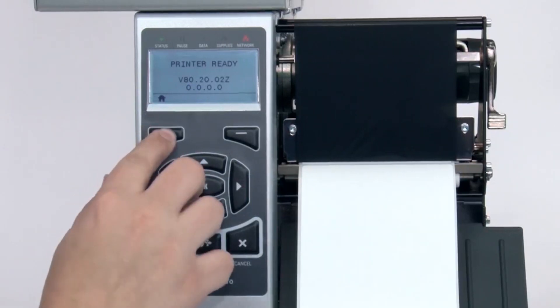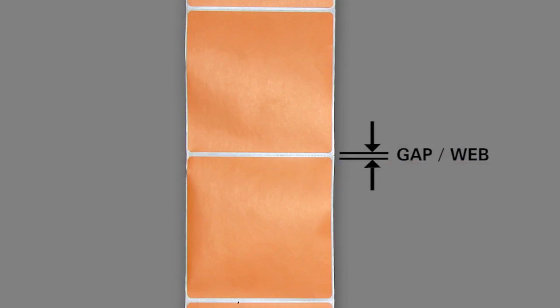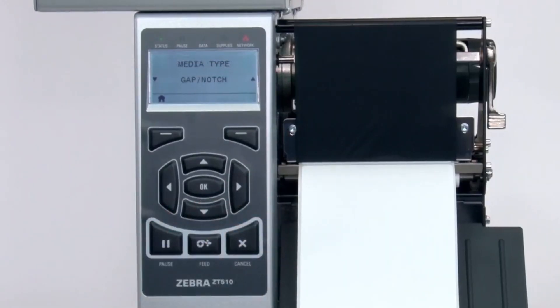First, select your media sensing feature in the menu. If your media has a gap, also referred to as a web, or has holes or notches, select Gap Notch in the menu.